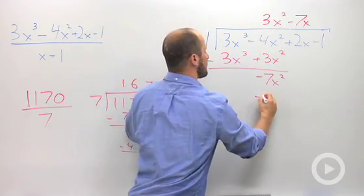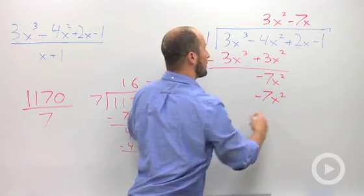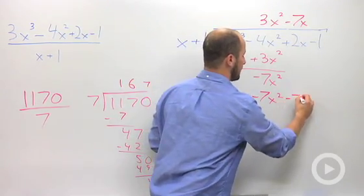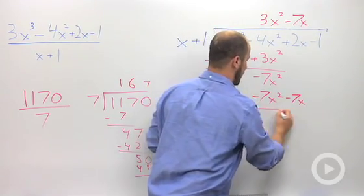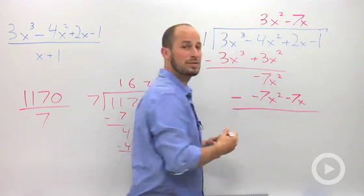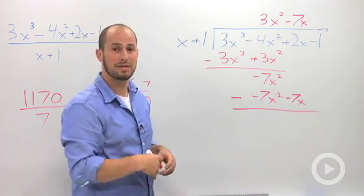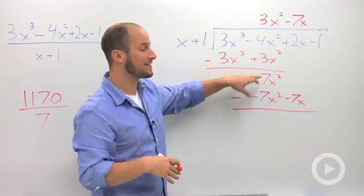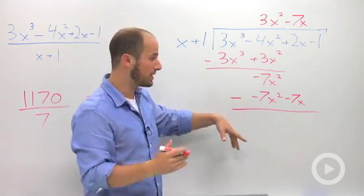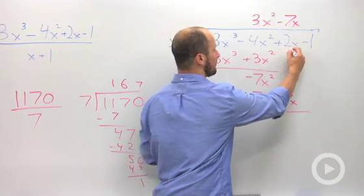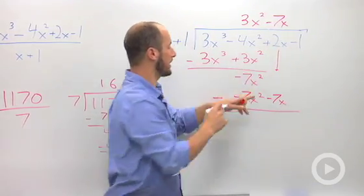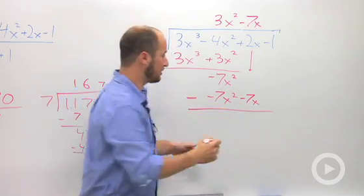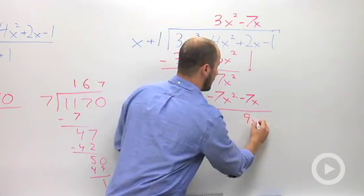So negative 7x times x is negative 7x squared. Negative 7x times 1 is negative 7x. Once again, we want to subtract, making sure we distribute that negative sign through. Negative 7x squared minus negative 7x squared—those cancel, which is what we wanted. And then we still have this 2 up here. So it's 2x minus negative 7x: 2x plus 7x, which turns into 9x.